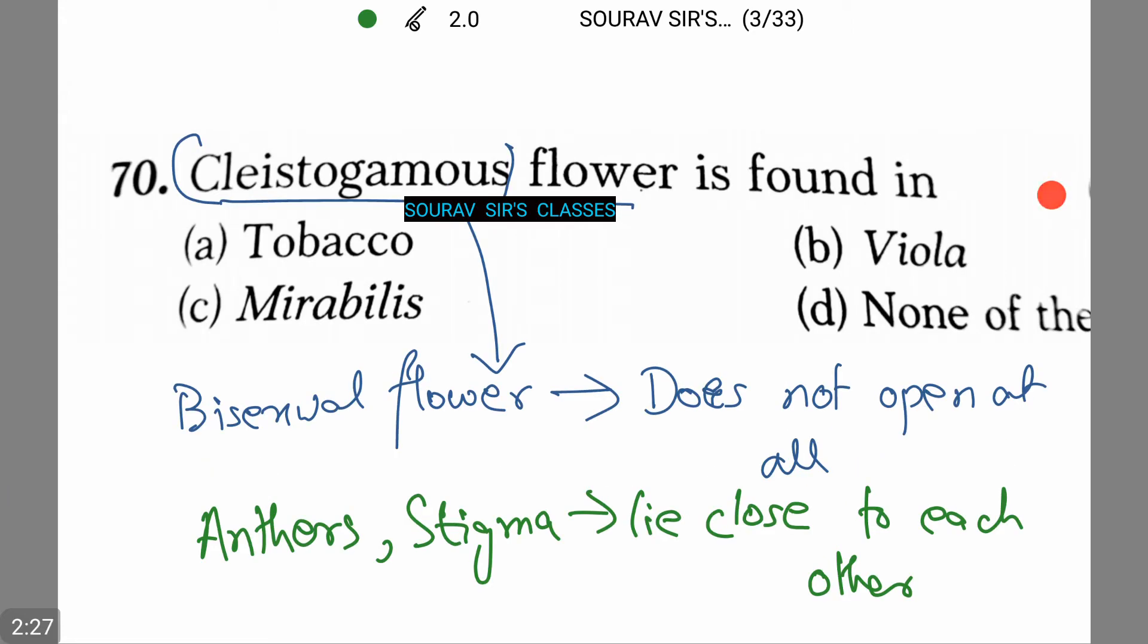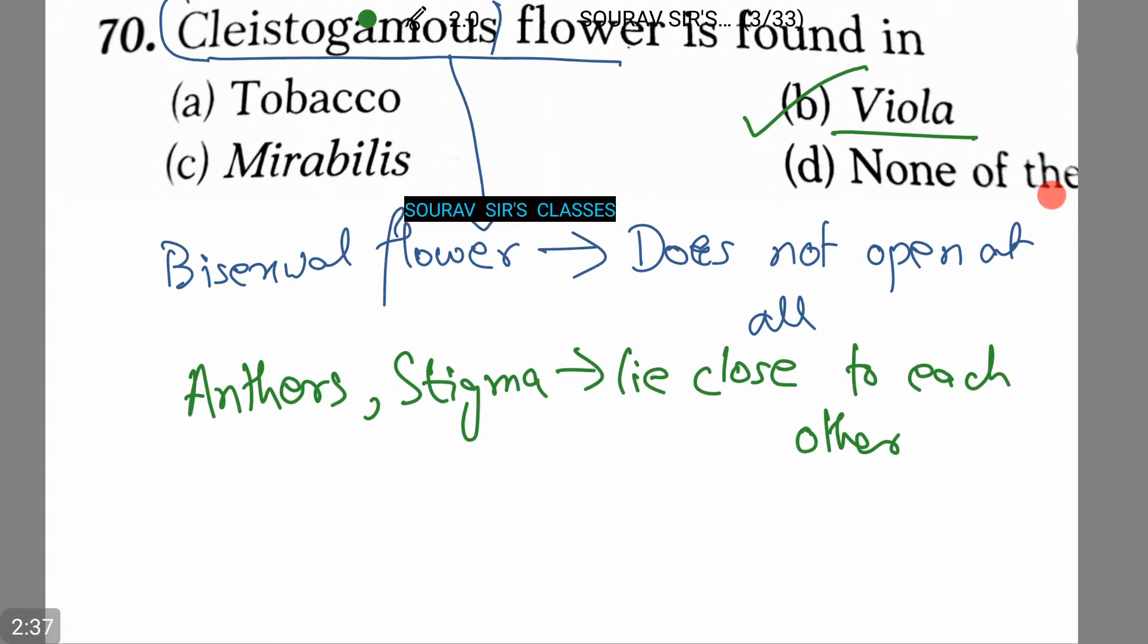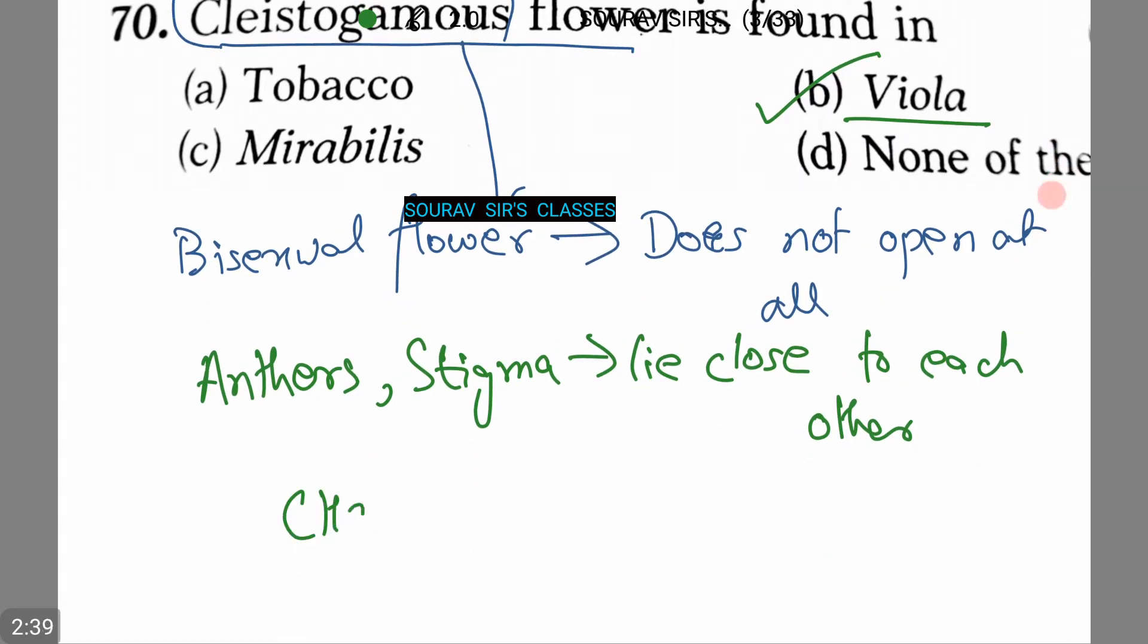Thus among the given options, option number B, Viola, has both cleistogamous and chasmogamous flowers. Chasmogamous is just the opposite of cleistogamous. That is, the flowers remain open with exposed anthers and stigma. Thus Viola will be the correct answer.